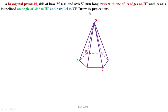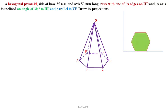So clearly, one of its edges is on HP. If one edge is on HP, what is the position of the base? The base plane surface is a hexagon, so this edge is on HP. If this edge is on HP, after rotation of 90 degrees in the clockwise direction of the horizontal plane, these two edges will become perpendicular to the XY reference line.